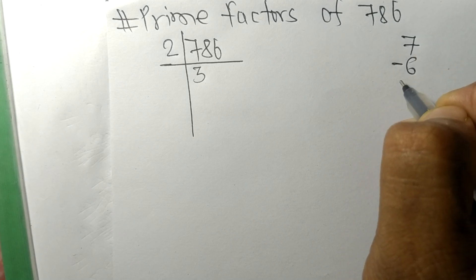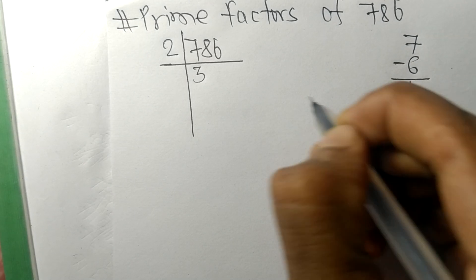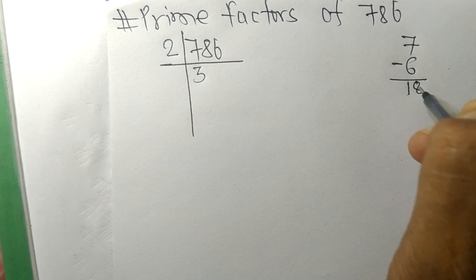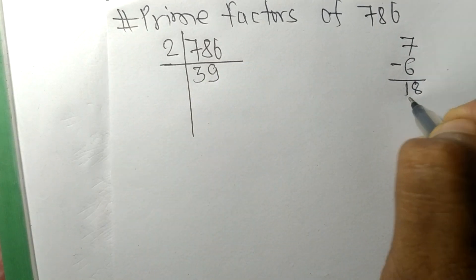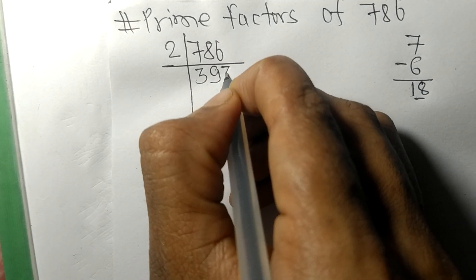6. On subtracting we get 1, and this 8 becomes 18. 2 times 9 means 18, and 2 times 3 means